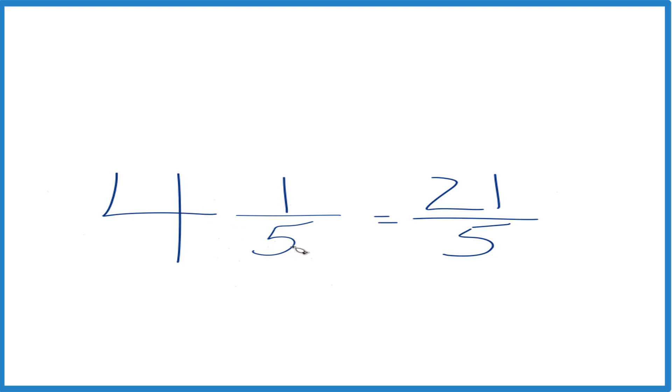4 times 5, that's 20. 20 plus 1, that's 21. Bring the denominator across, we got it.